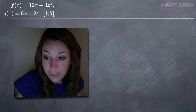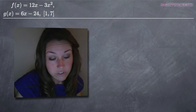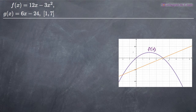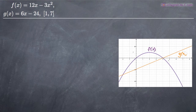Let's take a look at the graphs of these two functions. We have the purple graph which represents f(x), and then we have the orange graph which represents g(x). If you have access to a graphing calculator you can graph these on that; otherwise, these two functions are pretty simple to sketch without a calculator. Either way, we've got f(x) and g(x), and we've been asked to find the area on the range 1 to 7.